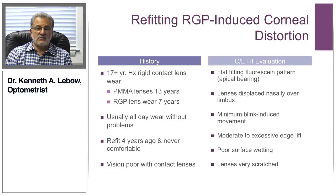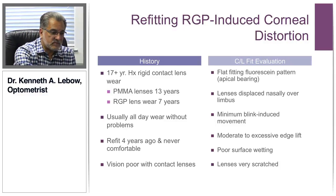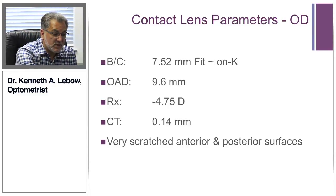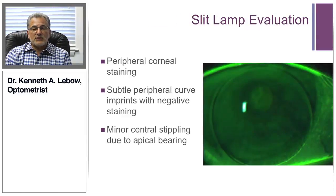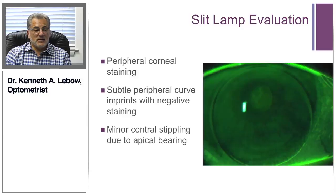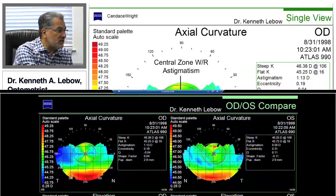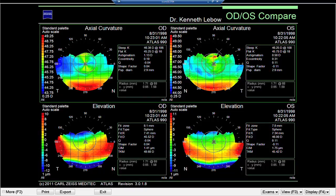There was moderate to excessive edge lift, poor surface wetting, and the lenses themselves were very scratched. The parameters: a 7.52 base curve, pretty much on the flat K, with a relatively large lens diameter of 9.6 millimeters. The slide shows the compression ring when the lens is removed, most likely a bicarve lens because you can see both curvatures. In addition, there was some central stippling, which confirmed my diagnosis of rigid lens adhesion syndrome.